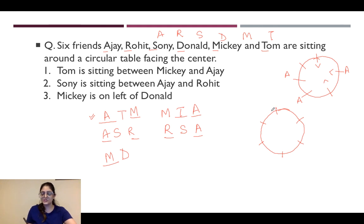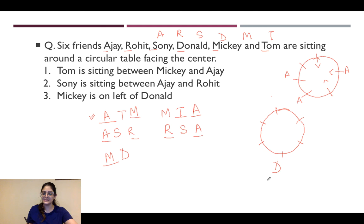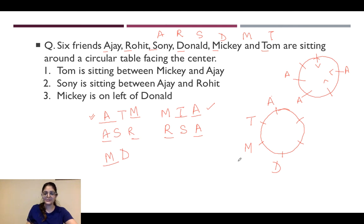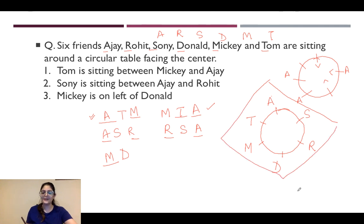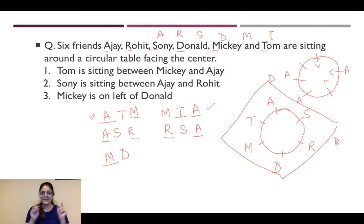Continuing the arrangement: with D placed, M to D's left, T between M and A, then placing S between A and R. The final circular seating arrangement is: D, M, T, A, S, R — going around the table. You can verify this arrangement. It doesn't matter if you start your D from a different position on the circle — it is absolutely the same arrangement as long as all are placed correctly relative to each other.